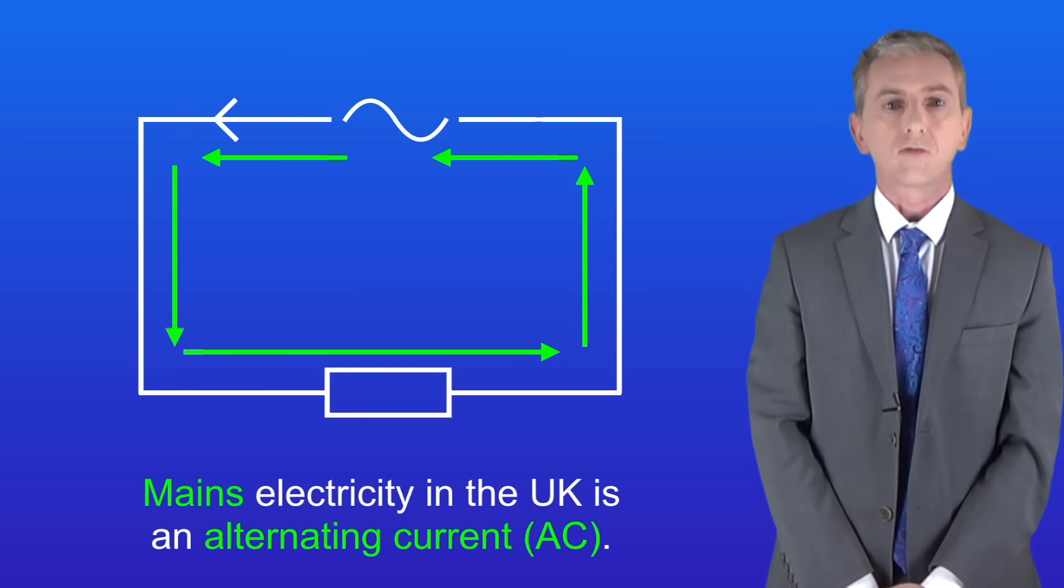In this circuit I've replaced the cell with a mains power supply. Now mains electricity is an alternating current, not a direct current. Alternating current is abbreviated to AC and the key feature of alternating current is that the current is constantly changing direction like this.